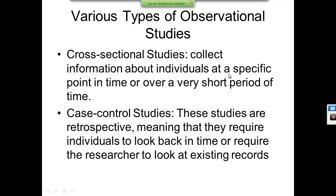Various types of observational studies: cross-sectional studies collect information about individuals at a specific point in time or over a very short period of time. These are a lot easier to do than other types. You can go down to a mall and observe what's going on and record it, or follow someone for the next 30 days. Cross-sectional is just looking at a specific point in time. This isn't always studying somebody live — it could also be looking at results that somebody else has collected.